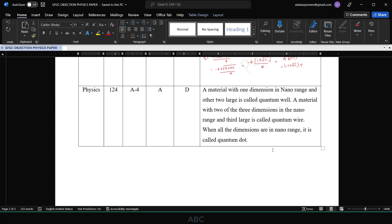I have explained that a material with one dimension in nano range and other two dimensions which are large is called quantum well. A material with two of the three dimensions in the nano range and third large is called quantum wire. When all the dimensions are in nano range, then only it is called quantum dot. This is what I feel, so I have included this question in the objections.